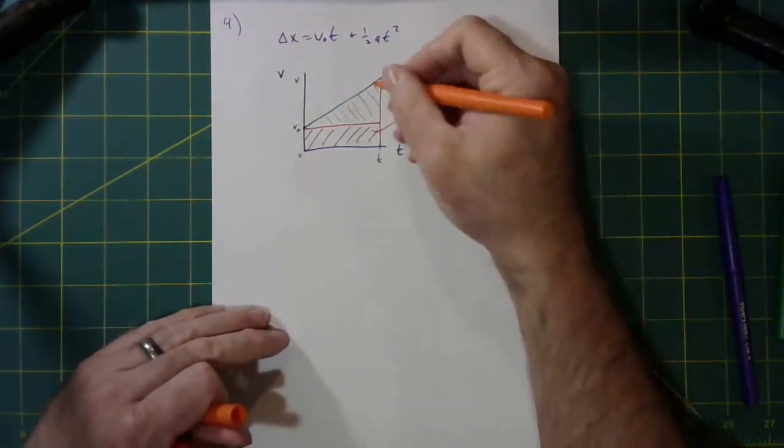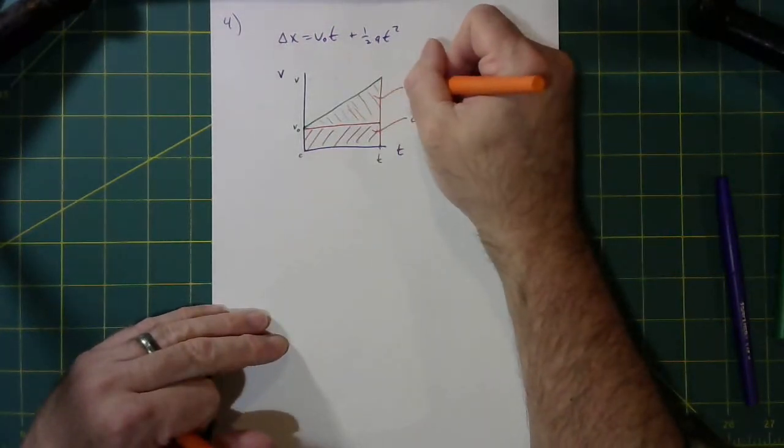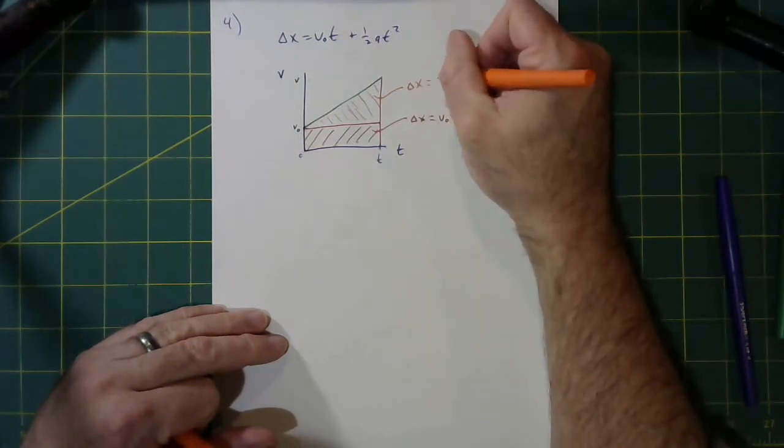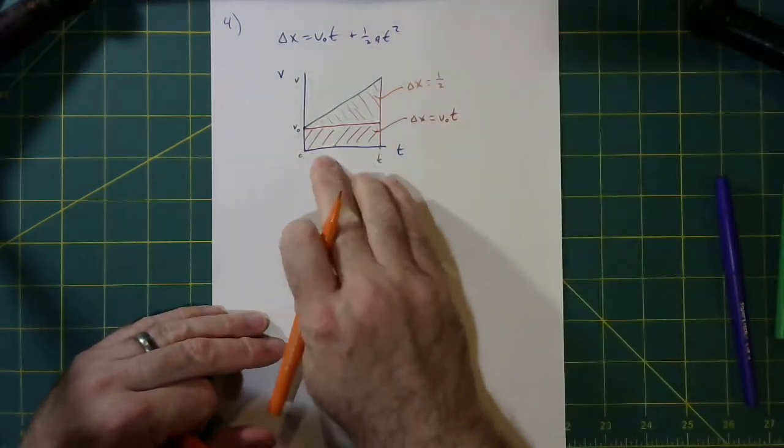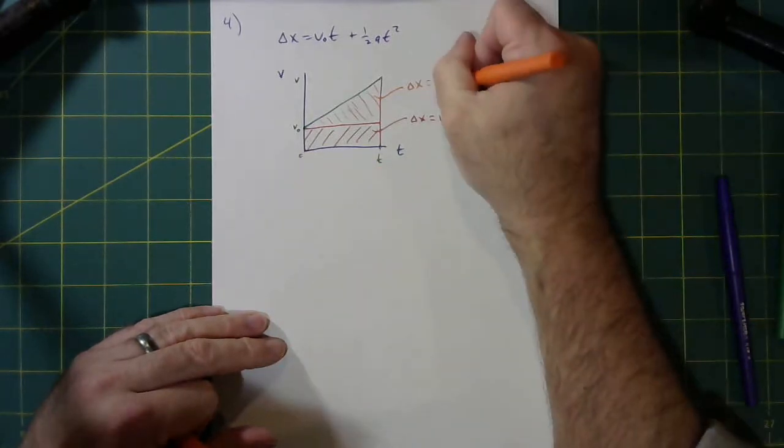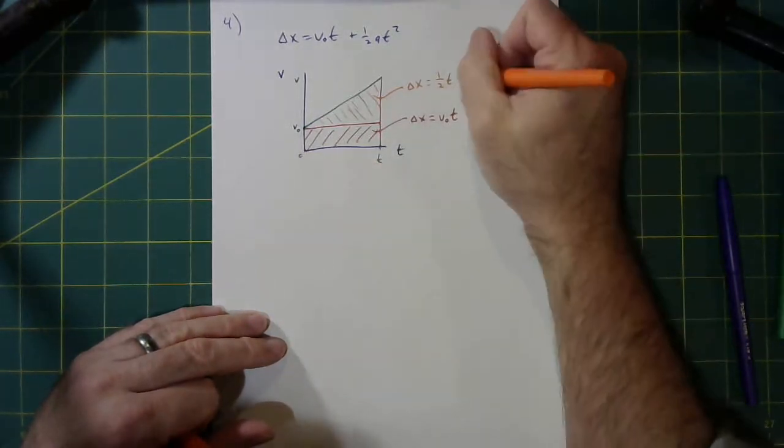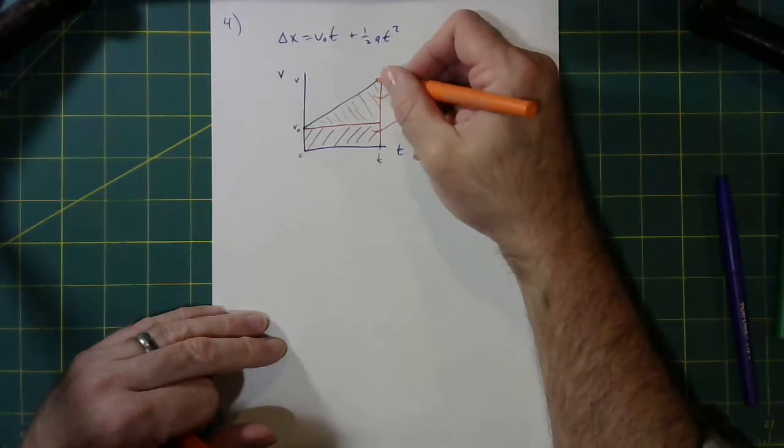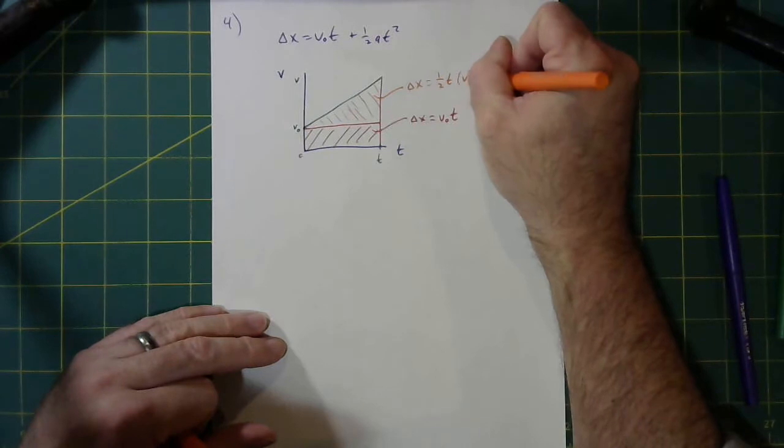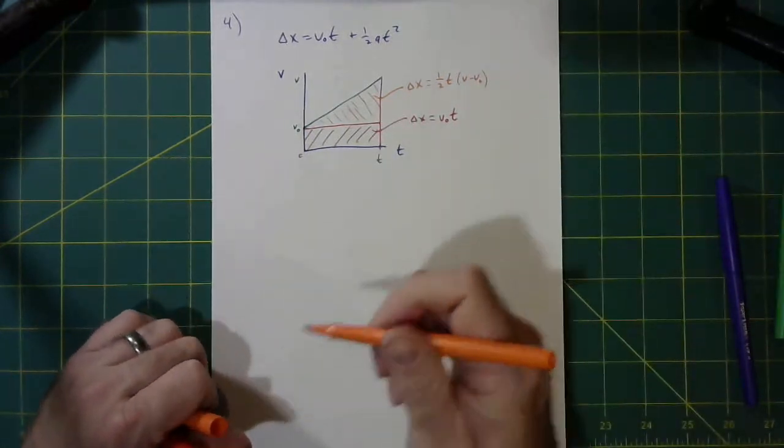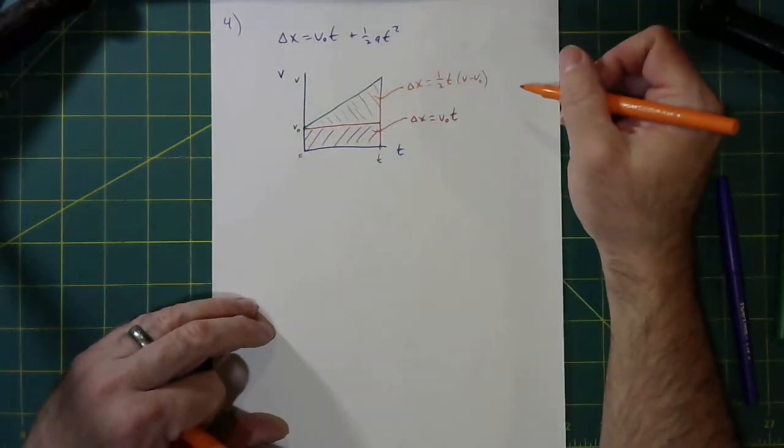And then the second area, this triangular area, well, it's going to be a triangle. So it'd be one half base times height. So it's one half, the base is t, that duration, that time there. And the height then, what's this height? Well, that's going from v naught to v. So it's v minus v naught.